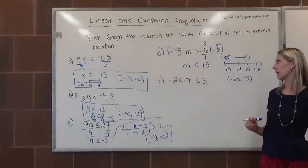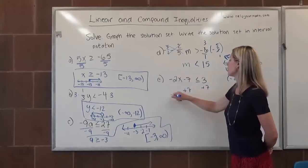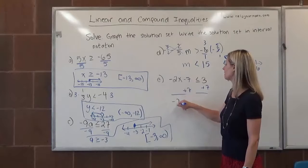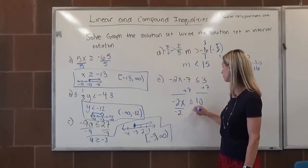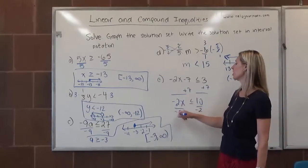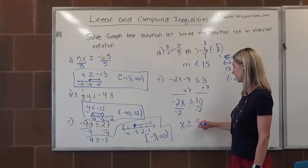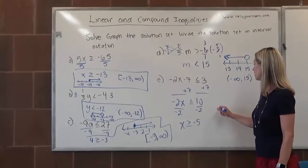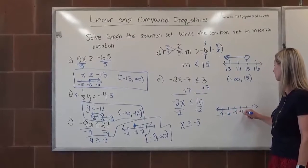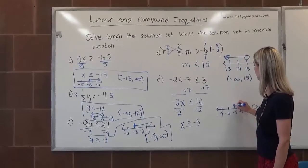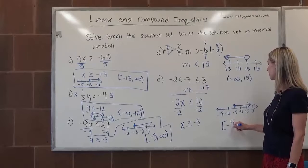Last but not least for this group, letter E. We need to get x by itself, so the first thing we do is add 7 to both sides. With addition and subtraction, we don't have any weird rules — you're allowed to add and subtract and it will never change the inequality symbol. We get negative 2x is less than or equal to 10. Divide both sides by negative 2 — the bells and whistles should be going off because we divided by something negative. That turns the inequality around to greater than or equal to. 10 divided by negative 2 is negative 5. Negative 5 is part of the solution set so we do a closed circle, and numbers bigger than negative 5 are to the right. In interval notation, we include negative 5 and it goes up to infinity.